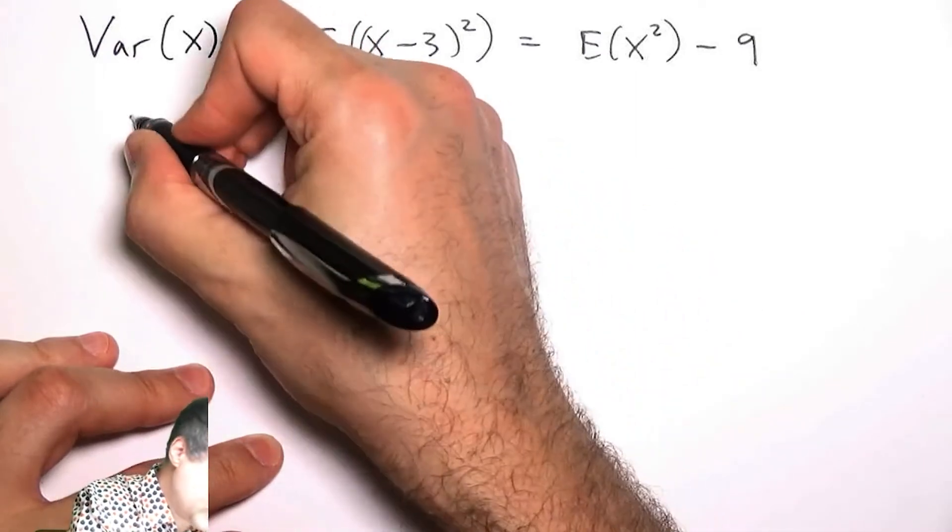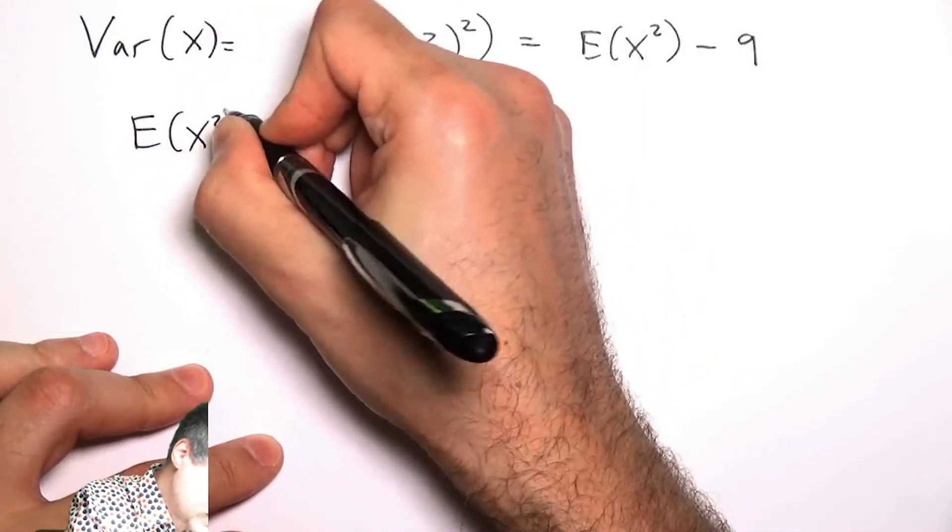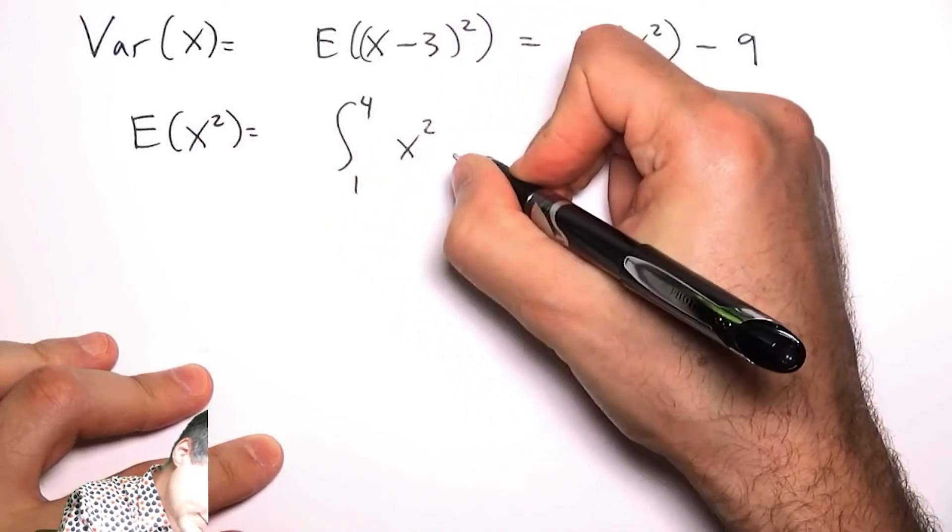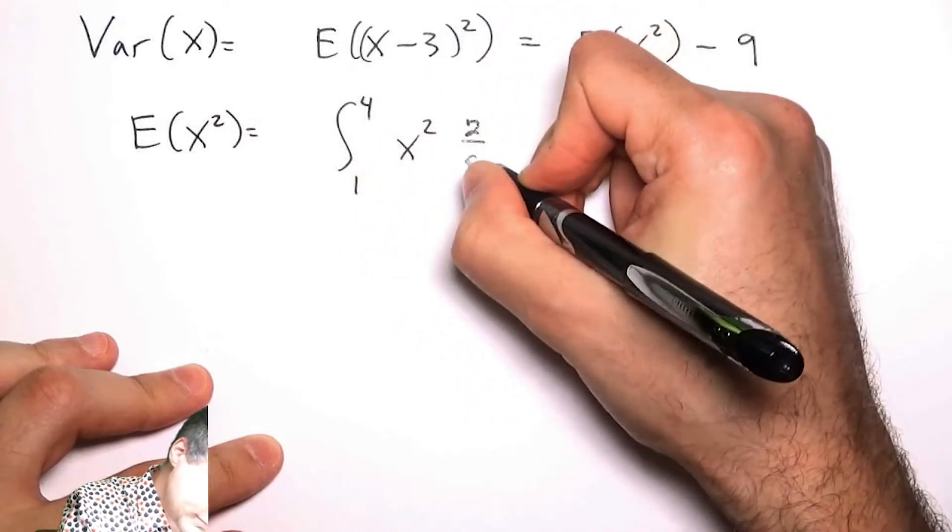So let me compute E(X²). Again, it's going to look like this—here's the PDF.